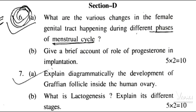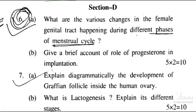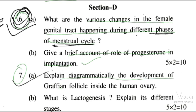Moving to Section D. Question 6: what are the various changes in the female genital tract happening during different phases of the menstrual cycle, and a brief account of the role of progesterone in implantation. Question 7: explain diagrammatically the development of the Graafian follicle inside the human ovary, and what is oogenesis — explain its different stages.